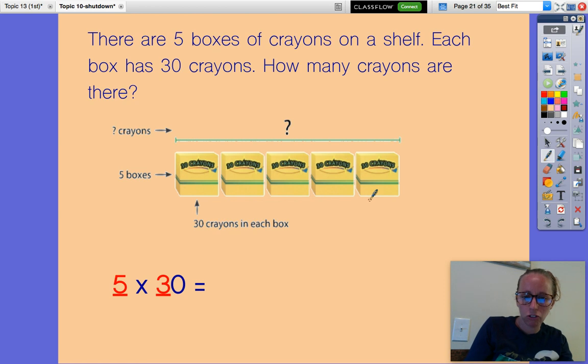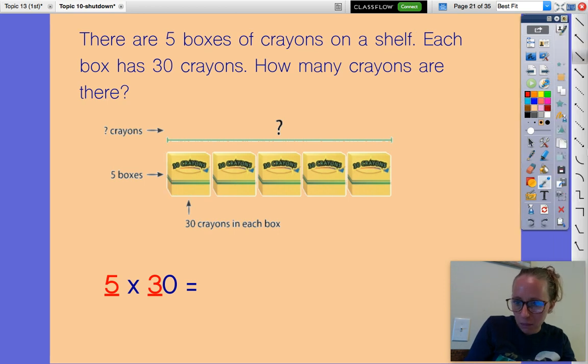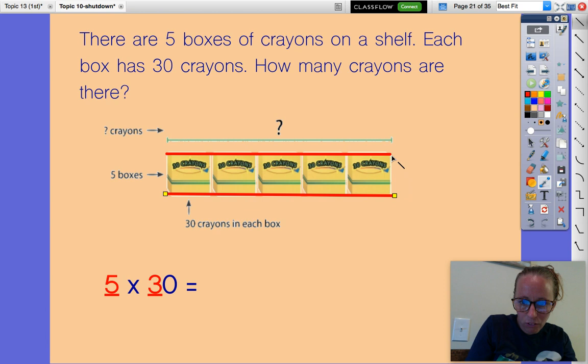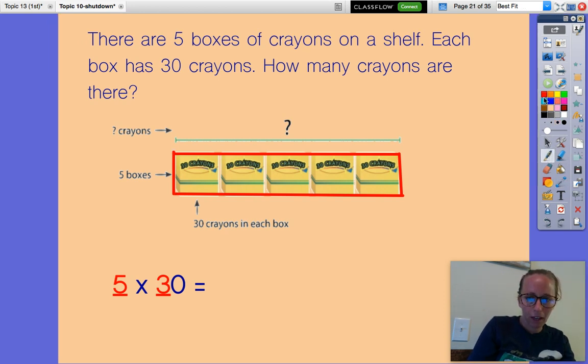I'm looking at this picture and this picture reminds me a lot of a bar diagram. We have our five boxes and those are like our five equal groups. Five boxes are five equal groups and in each box there's 30 crayons. It's already labeled. So we need to figure out what the top is, and remember top total.